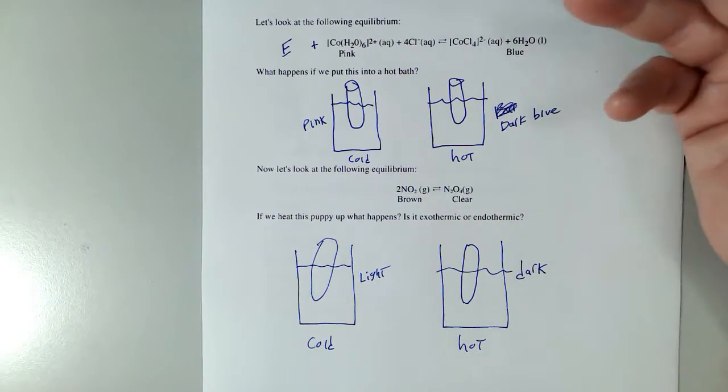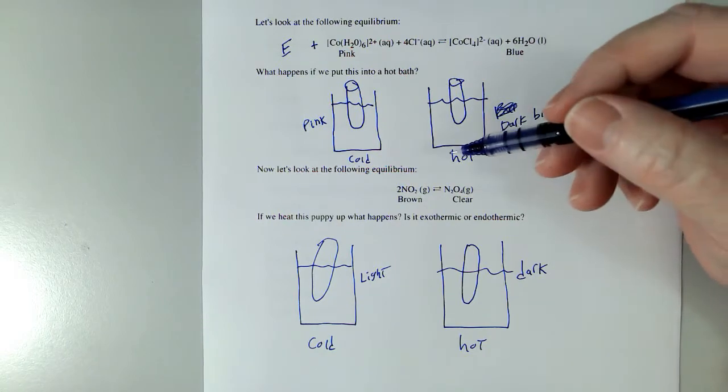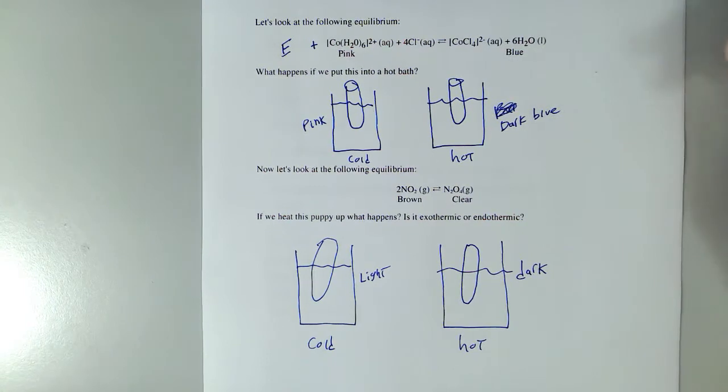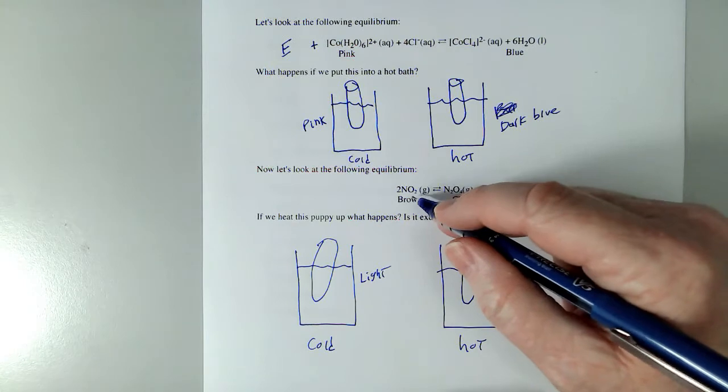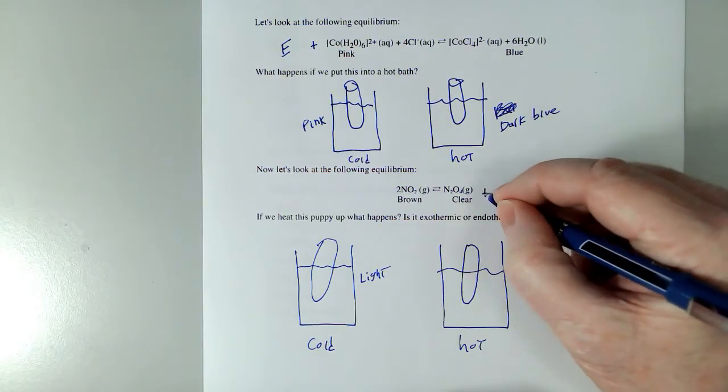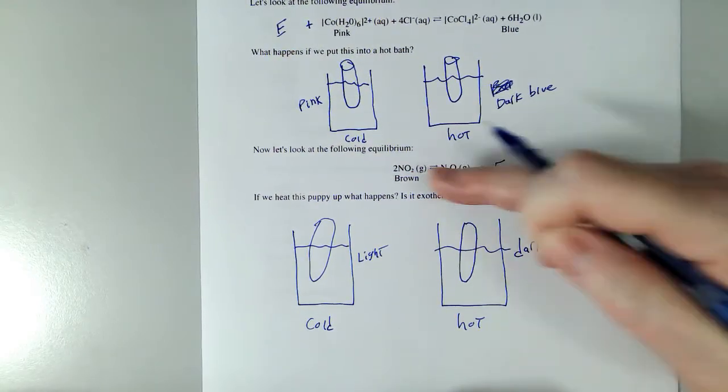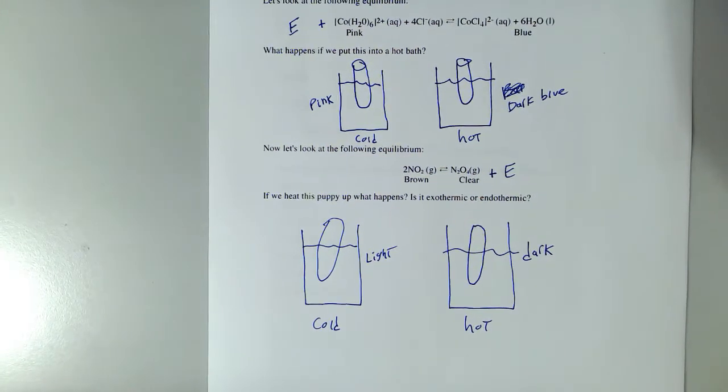Now, this NO2, that is smog. You're used to seeing that. Not as much in LA as we used to. But if you've ever been to places like, say, Mexico City, Manila, Beijing, Mumbai, very large amounts of smog. Also, especially when it's hot. So since it's going to the darker side, which is this brown NO2 gas, this time we can say that energy is a product. And adding energy shifts it that way. And removing energy shifts it this way. So that's Le Chatelier's principle in action.